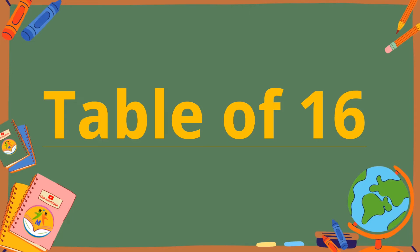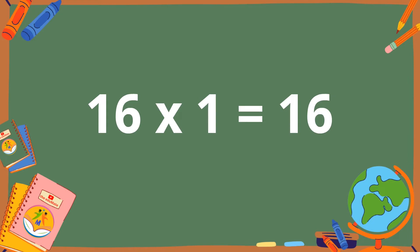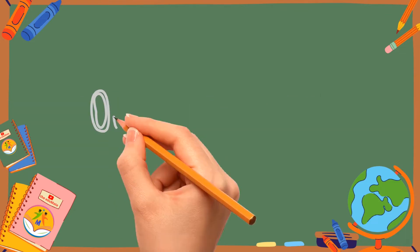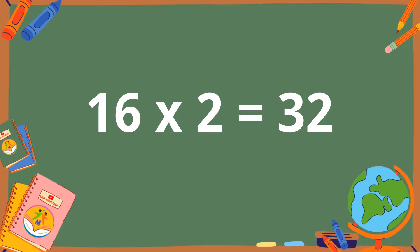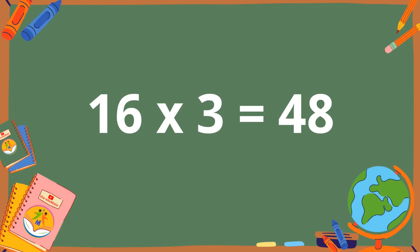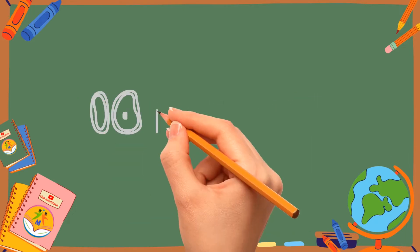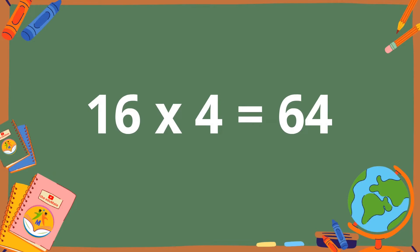Table of 16. 16 ones are 16. 16 twos are 32. 16 threes are 48. 16 fours are 64.